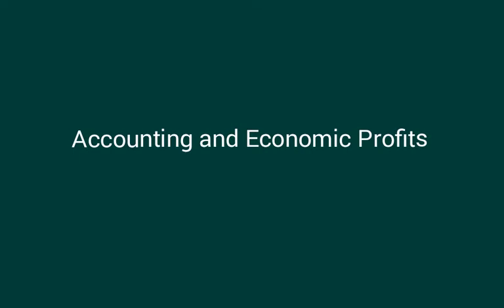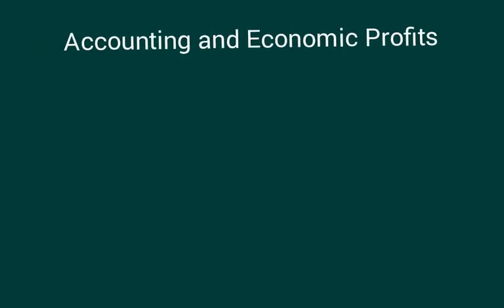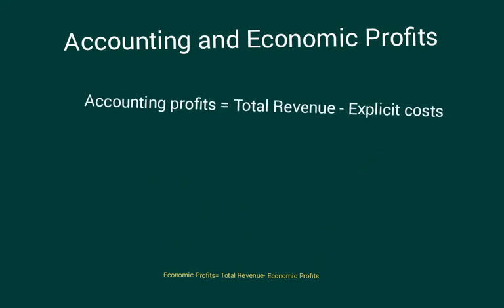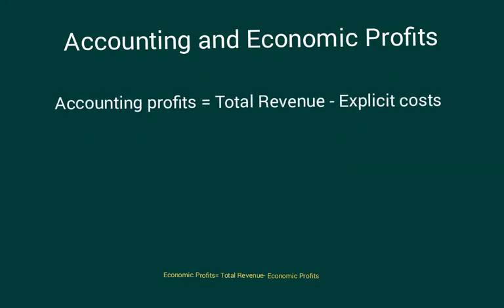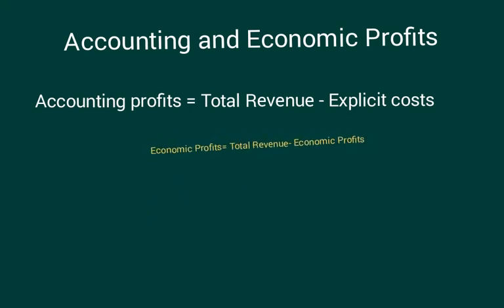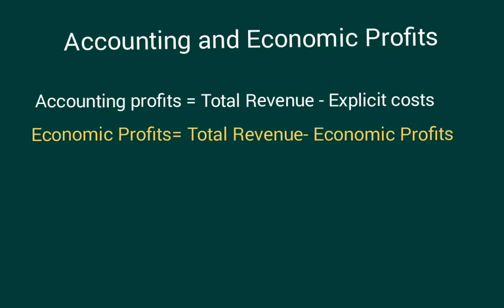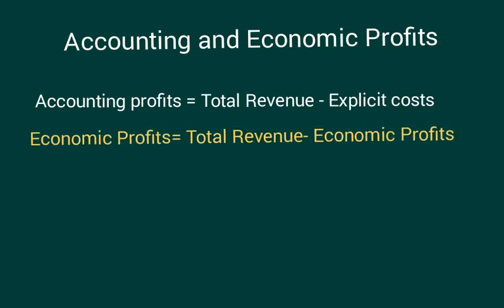Let's talk about accounting and economic profits. Accounting profits are defined as the total revenue that the firm has minus the explicit costs only. Economic profits, on the other hand, we take the total revenue but we subtract all of the economic costs — so both the explicit and the implicit costs.